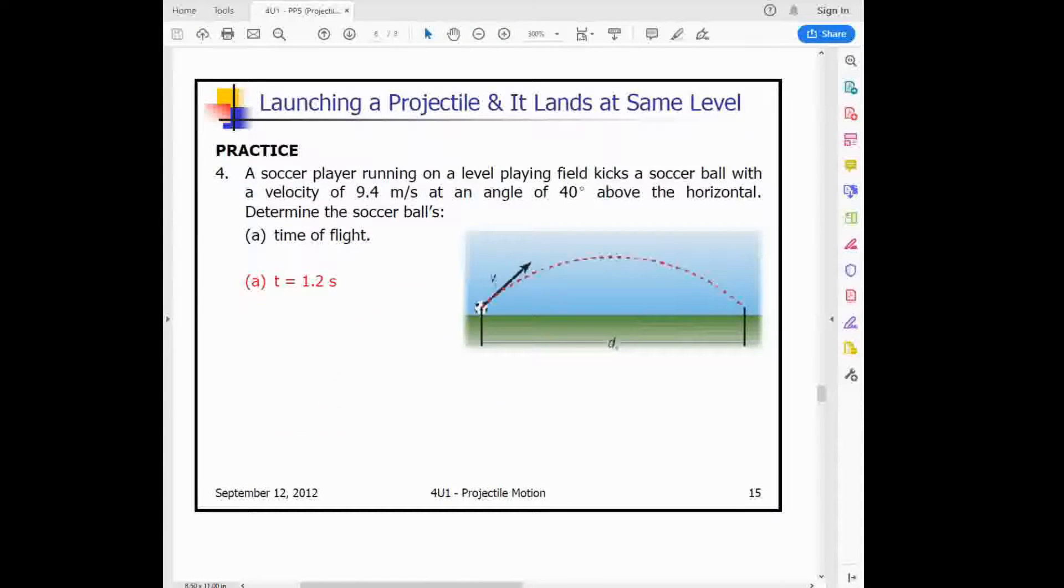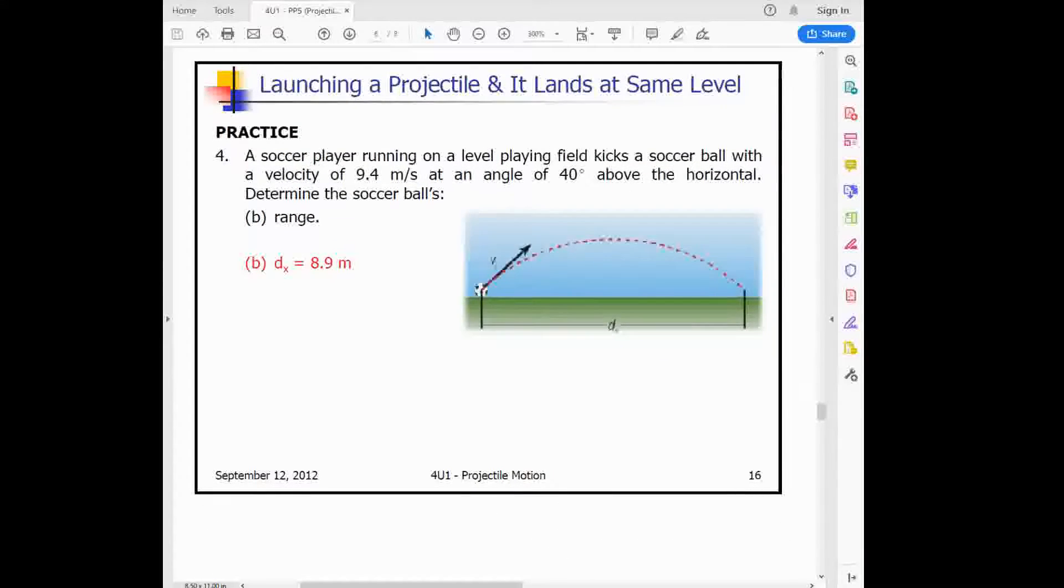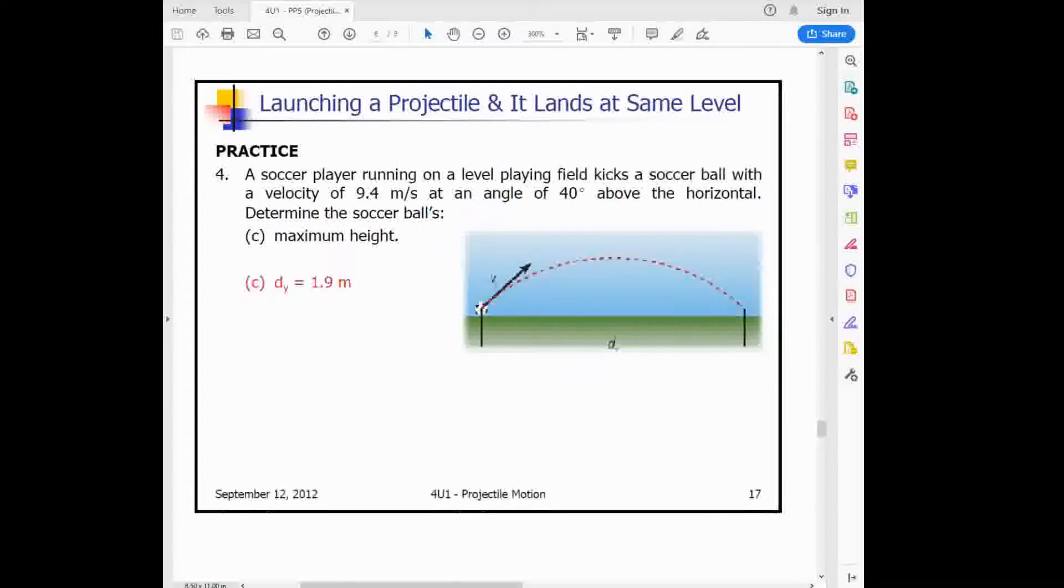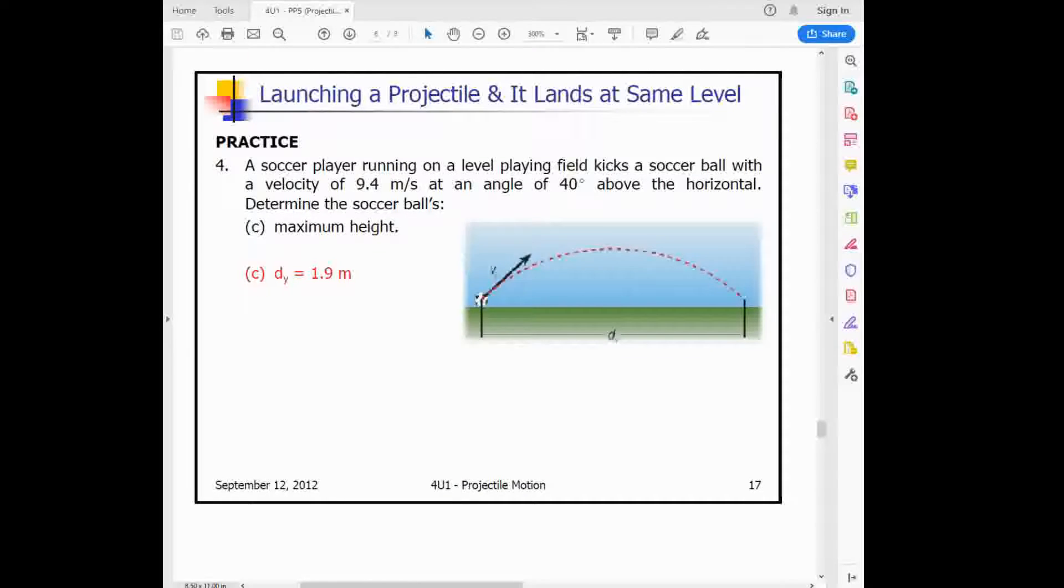Let's look at solving this problem. I won't show you how to do this calculation because it's just using the equation. Try this out on your calculator. We have a soccer player kicking a ball at a 40 degree angle with initial velocity 9.4 meters per second. Try to determine the time of flight using that equation, and you should get 1.2. Same problem, try to find the range. Use the equation, substitute, you should get 9.8. And again, the maximum height. That is another equation, simple plugging in. Use the equation and you should get 1.9.